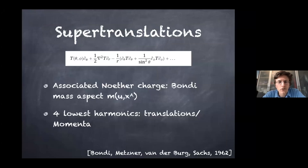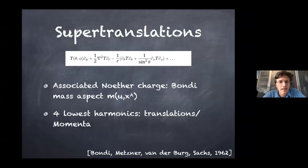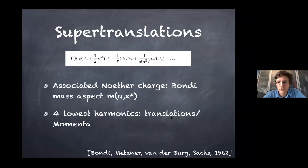Let me give the basic definition of a super-translation. It is a generator of the form of an arbitrary function on the sphere times the vector along the retarded time direction, with some extra correction depending on the gauge. There is a conserved charge associated with the Bondi mass aspect, and the lowest harmonics are translations, associated to momenta. This entire structure was described in 1962.